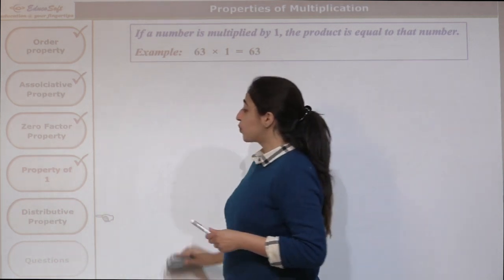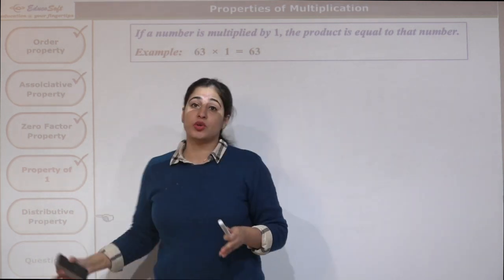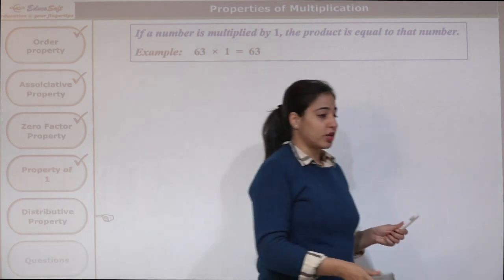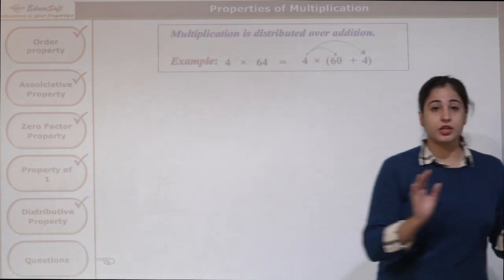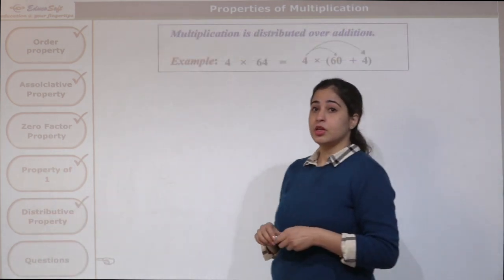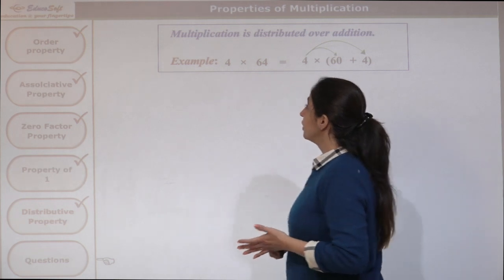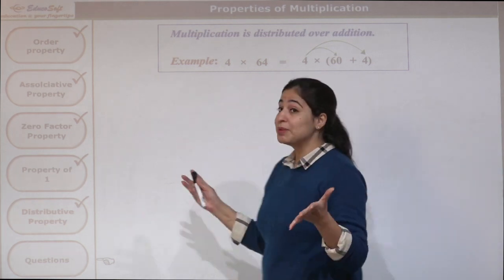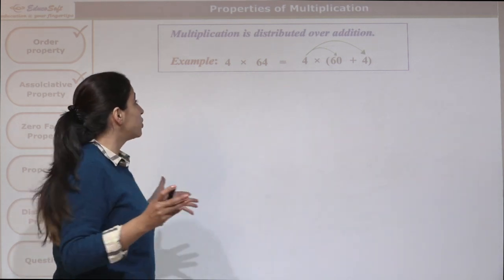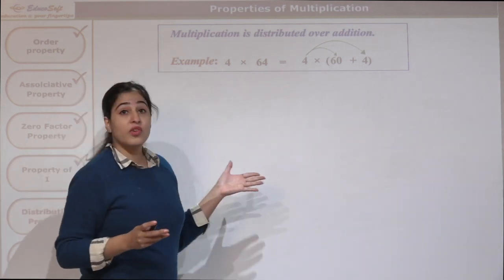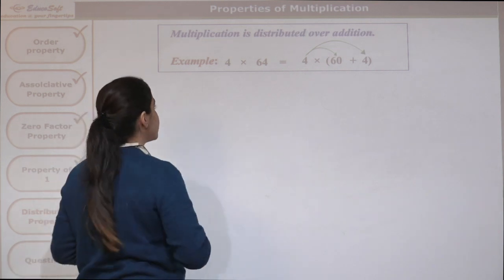The fifth property is the distributive property. Let us look at that. What does this say? That multiplication is distributed over addition. Let us see how.